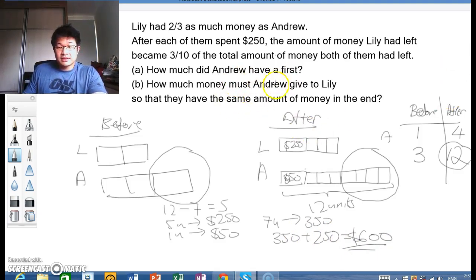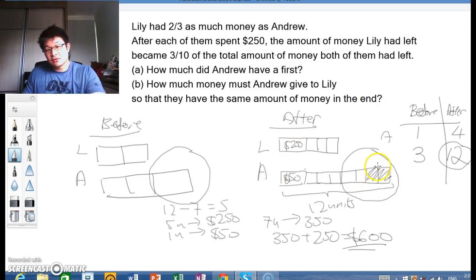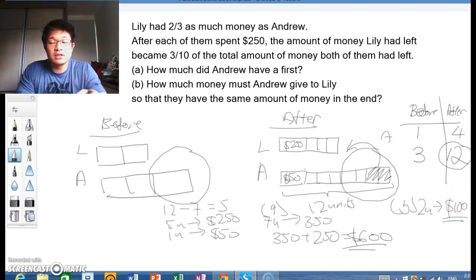Now, how much money must Andrew give? So when we study this model here, you see that if Andrew gives these two models over here, these two units, they will have the same number of units with the $250. So it will simply mean that Andrew needs to give 2 units. So therefore, 2 units would be $100. So Andrew needs to give $100 to Lily so that they both have the same amount of money in the end.